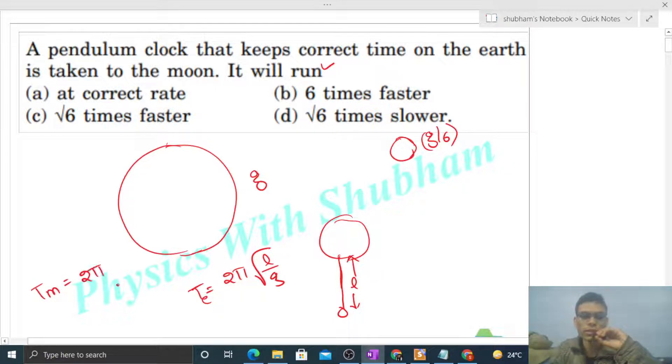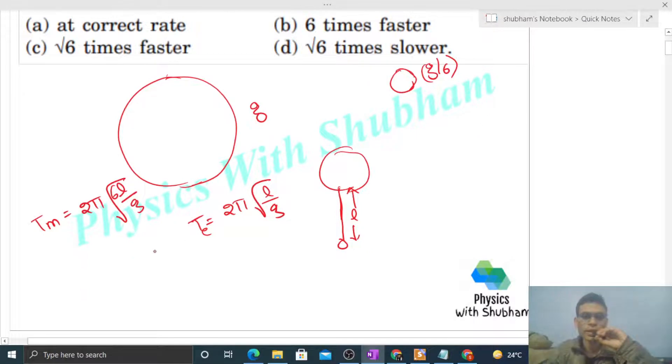l b constant ho jayega, length right? g ki jaga kitna jayega? g by 6. So ye g and ye 6. So you can see ki time period at Moon divided by time period at Earth.